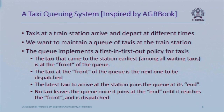In this example, we are going to implement the full-blown taxi queuing system. Think of a situation where taxis are arriving and departing at different times, maybe at a train station, and we want to maintain a queue of these taxis. The queue has the usual expected properties: the taxi that came earliest will be at the front and dispatched next, while the taxi that came latest will join at the end.